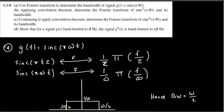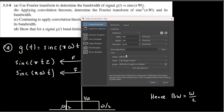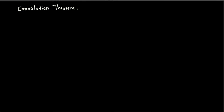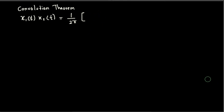Now for Part B: applying the convolution theorem, determine the Fourier transform of sinc²(φωt) and its bandwidth. The convolution theorem states that if you multiply two functions of t, x₁(t) and x₂(t), that is equivalent to (1/2φ) multiplied by the Fourier transform of x₁(ω) convolved with the Fourier transform of x₂(ω).